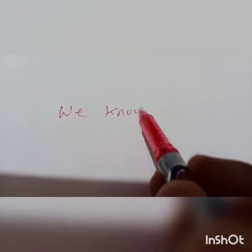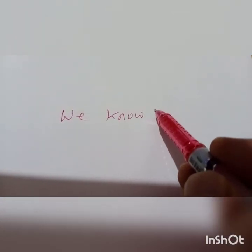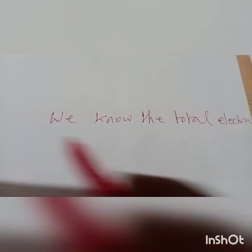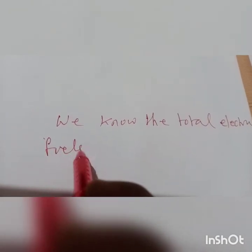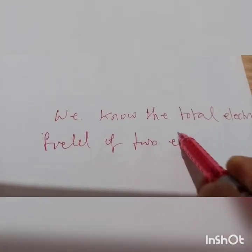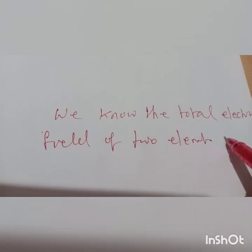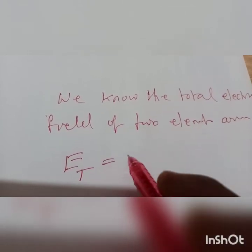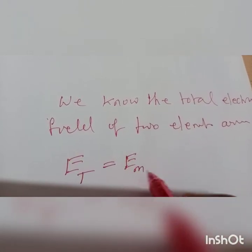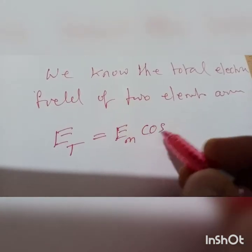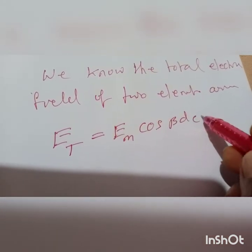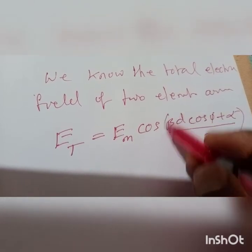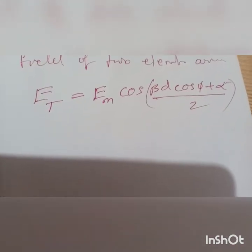We know the total electric field of a two-element array. That is: the total electric field Et is equal to the magnitude of the electric field Em times cosine of (β·d·cos φ + α) divided by 2. This has already been derived in the previous class.